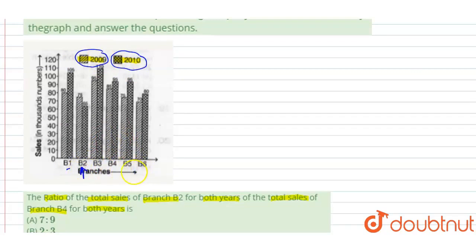For branch B2, we need to add the sales from 2009 and 2010. That's 75 plus 65, which equals 140 thousands.